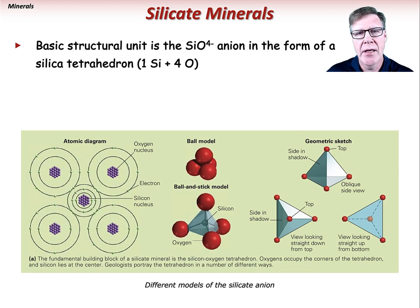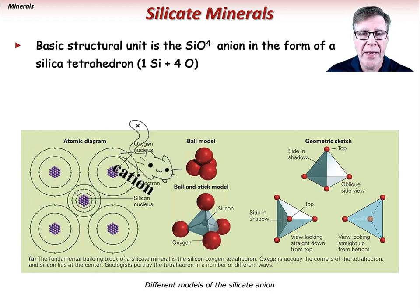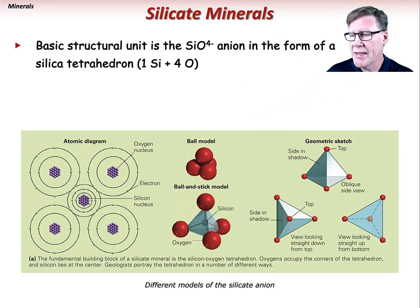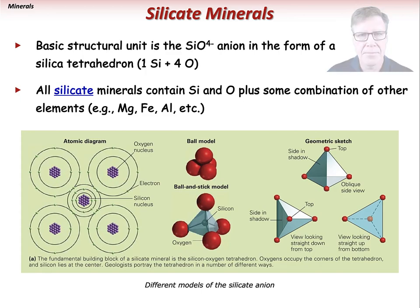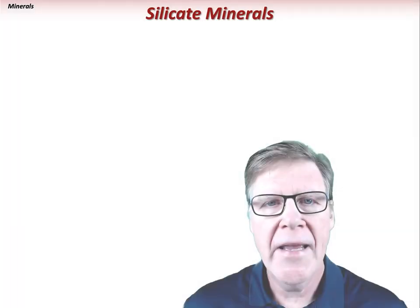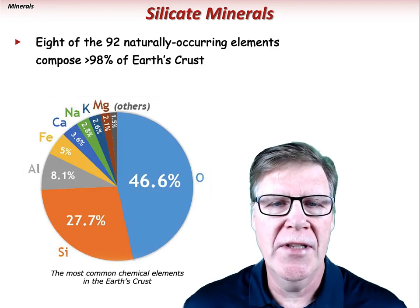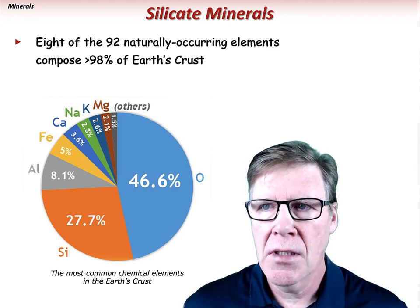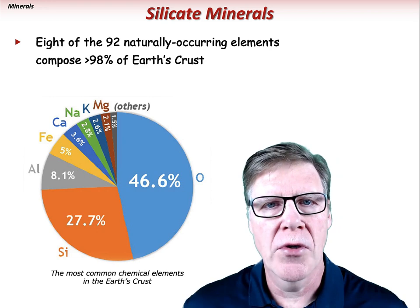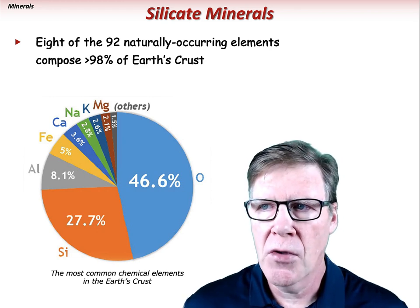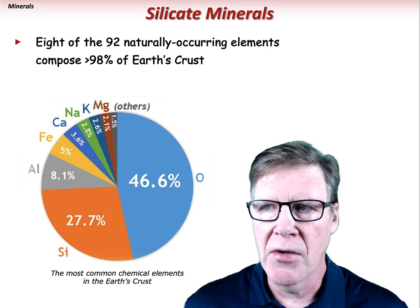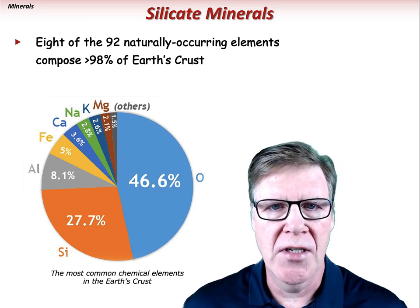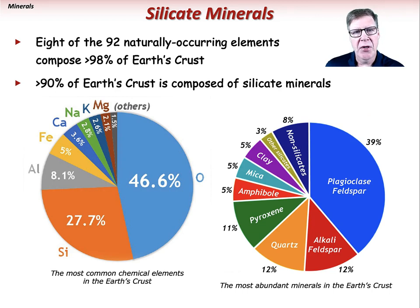The SiO4 anion attracts various cations — positively charged ions — including magnesium, iron, and aluminum. All silicate minerals contain silicon and oxygen plus some combination of other elements. Eight of the 92 naturally occurring elements compose more than 98% of Earth's crust, with oxygen and silicon making up roughly three-quarters of the total. It makes sense, then, that silicate minerals, fundamentally constructed with oxygen and silicon, compose more than 90% of the minerals in the Earth's crust.